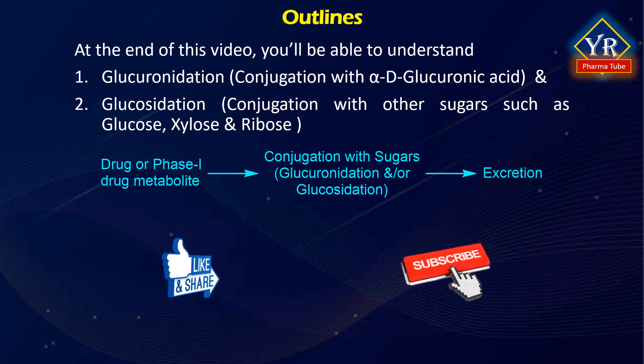It is to note that the major route of sugar conjugation is glucuronidation, although conjugation with glucose, xylose and ribose are also possible, less common, particularly in man.